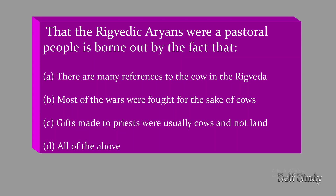That the Rig Vedic people were a pastoral people is borne out by the fact that: there are many references to the cow in the Rig Veda; most of the wars were fought for the sake of cows; gifts made to priests were usually cows and not land; or all of the above. The correct answer is all of the above — all three reasons tell us that the Rig Vedic Aryans were a pastoral people.